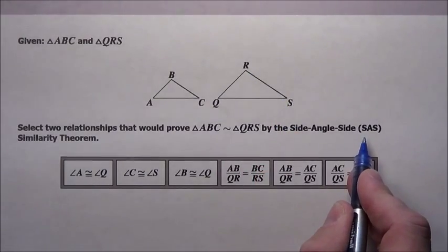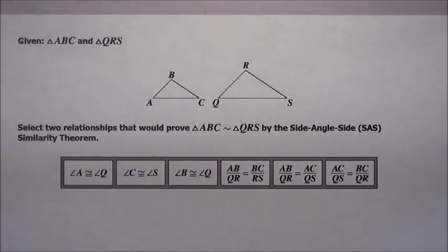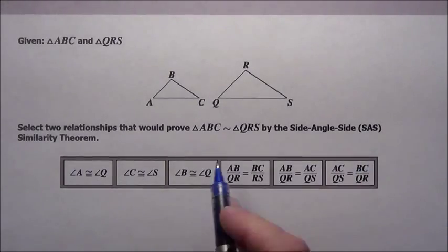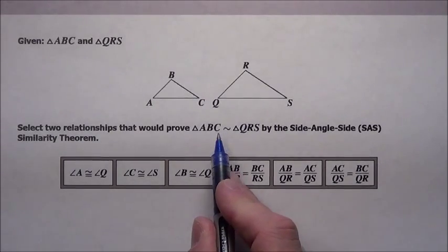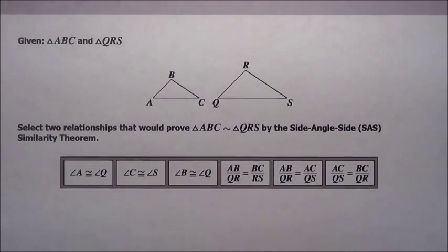Select two relationships that would prove triangle ABC is similar to QRS by the side-angle-side similarity theorem. So we need to match the sides, the angles, and then the sides. Obviously they're not going to be exactly the same side length, same angles, because then we would have them congruent. We're just trying to do it similar. So to be similar, I need the angles to match up and the sides to be in proportion to one another.